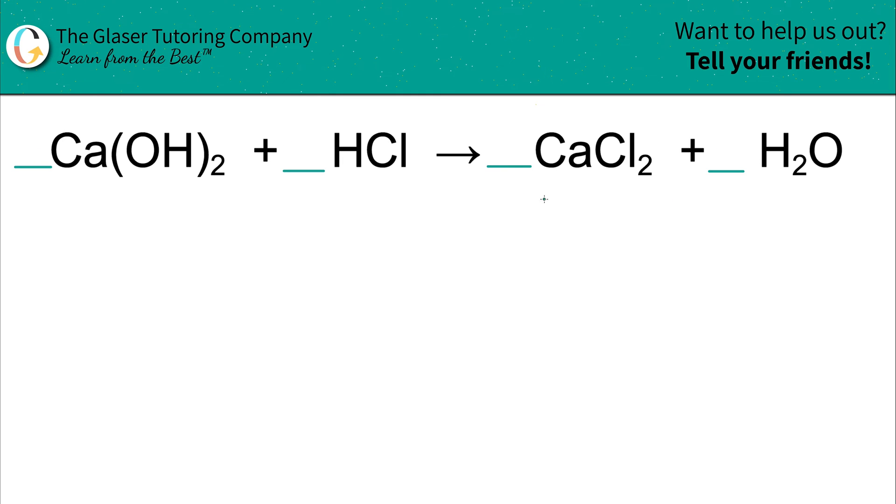The next thing, then, is to keep in mind the main principle of balancing, that however many atoms of each element you have on the left-hand side of your yield sign better equal however many atoms of each element you have on the right-hand side. That's the principle.